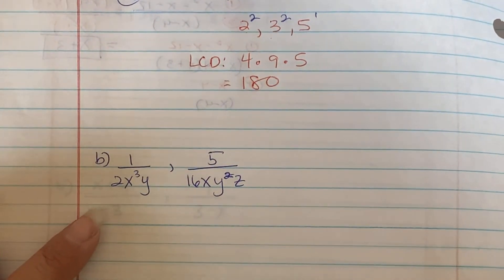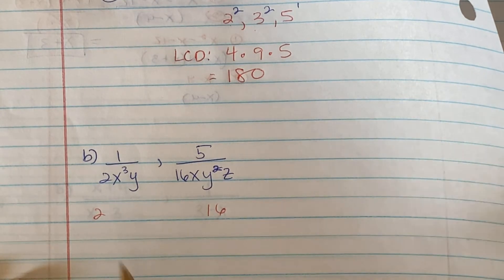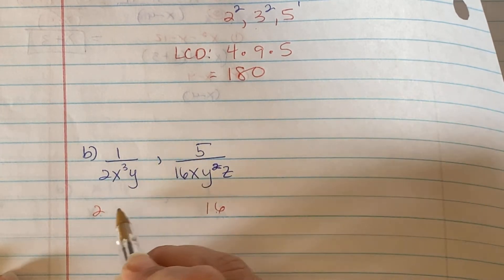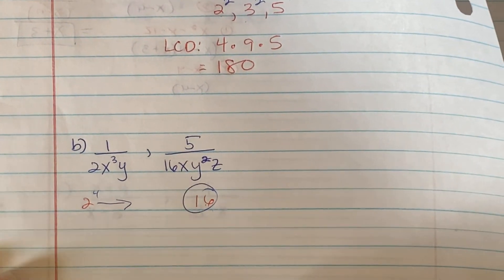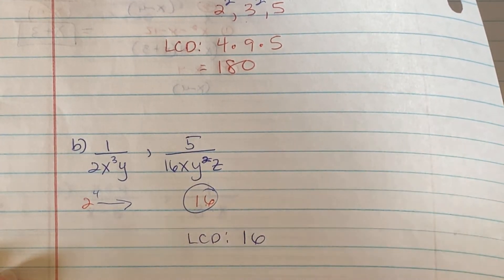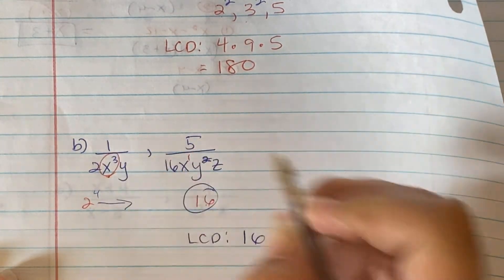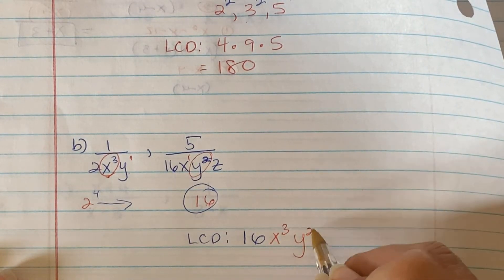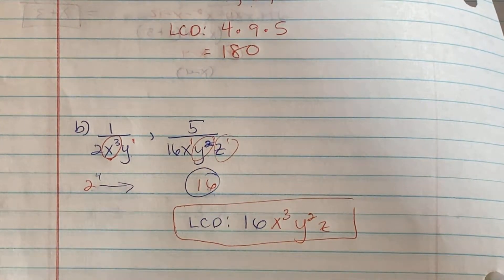On part B, we have 1 over 2x³y and 5 over 16xy²z. Looking at the numbers: 2 and 16 — 2 cannot become 16 going down, so 16 is our LCD value for the numeric part. For the variables: we have x³ and x¹ — take x³; y¹ and y² — take y²; no z and z¹ — take z. So our LCD is 16x³y²z.